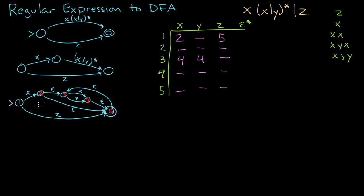Now we fill out the epsilon star column. State one goes to itself. State two goes to itself, and can also go to three and five — because from five you can also go to three — so we put two, three, five. State three can only go to itself on zero or more epsilons. State four can go to itself, it can also go to five, and five can go to three, so four, five, three for that one. State five can only go to itself. This chart completely encapsulates all the information from our NFA diagram.